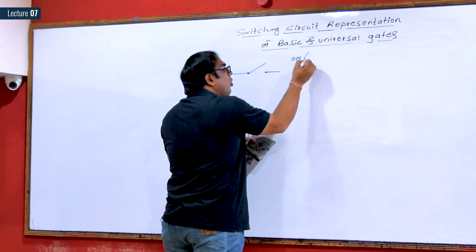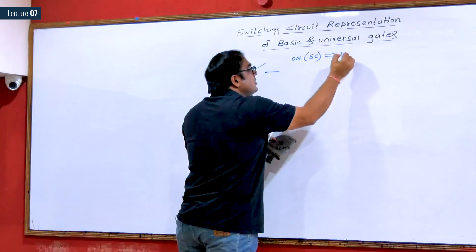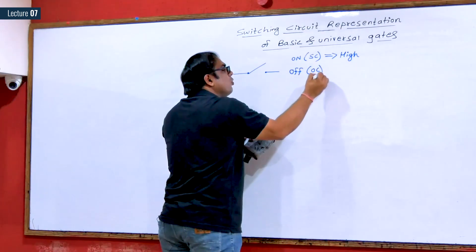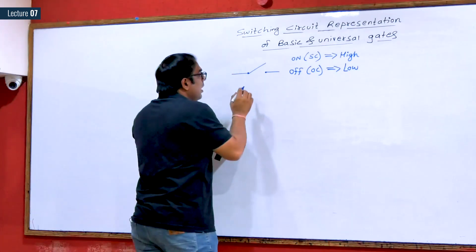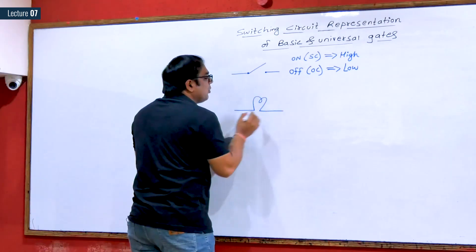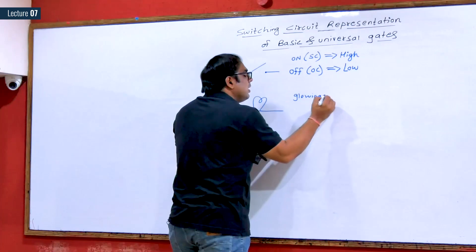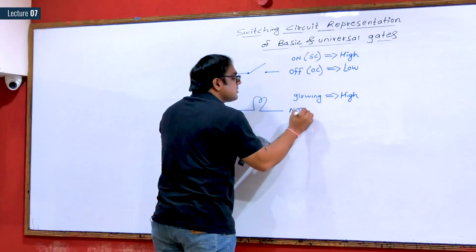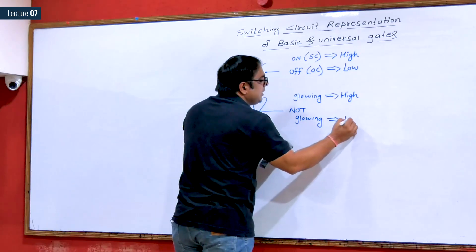When a switch is on, it means it is short-circuited and represents logic high. When a switch is off, it means open-circuited and represents logic low. We check the output via a bulb: if the bulb is glowing, it is logic high; if the bulb is not glowing, logic is low.